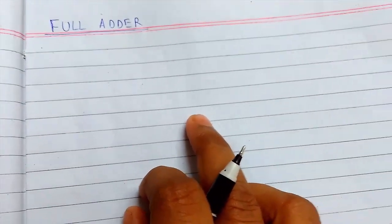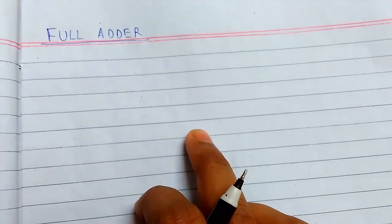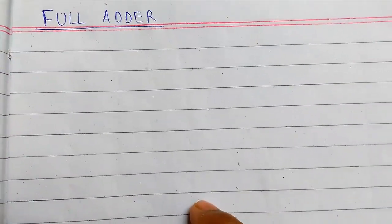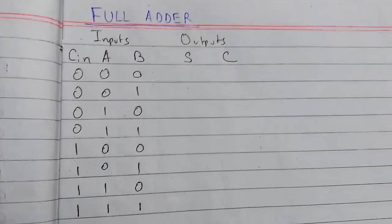A full adder can add three input bits: an addend, augend, and carry input generated by the previous stage of addition. It has two outputs, sum and carry out. I'll just show the truth table for it.